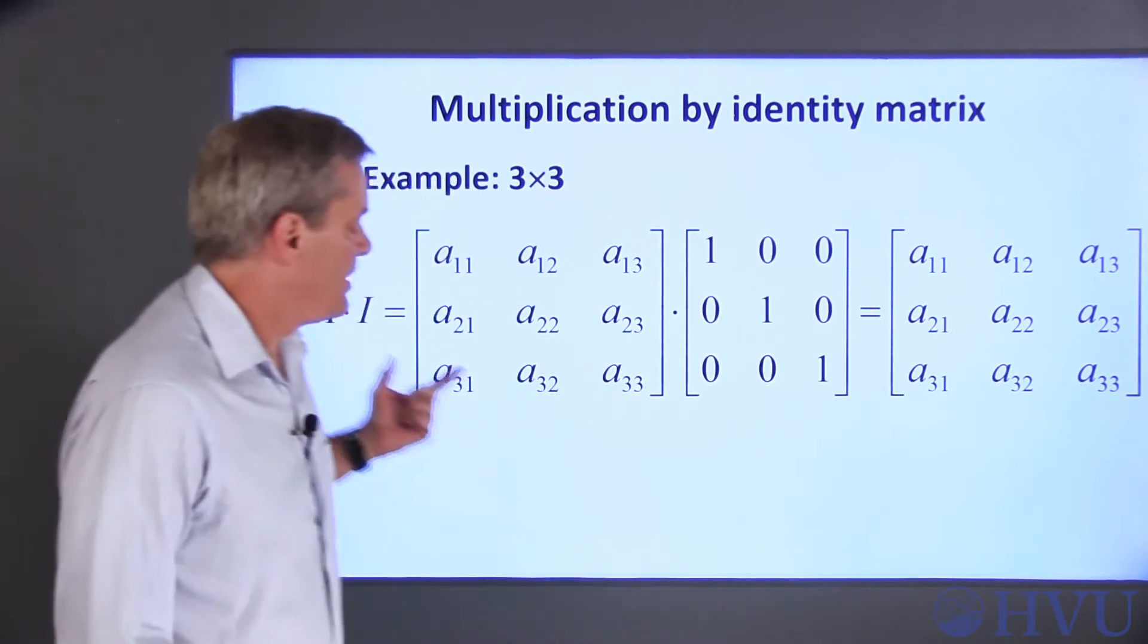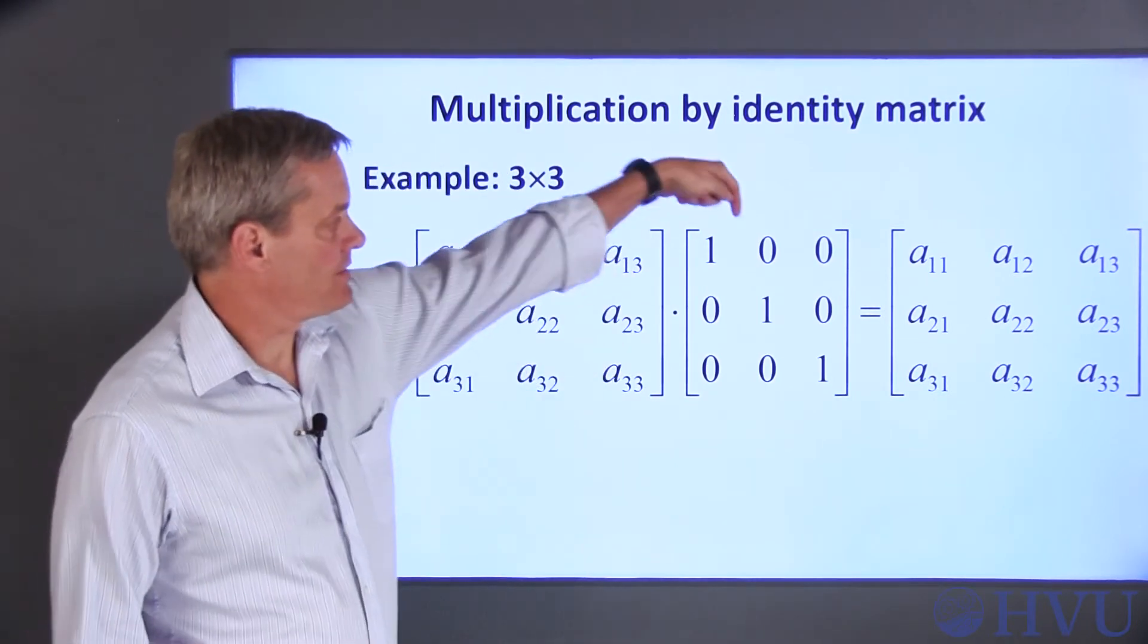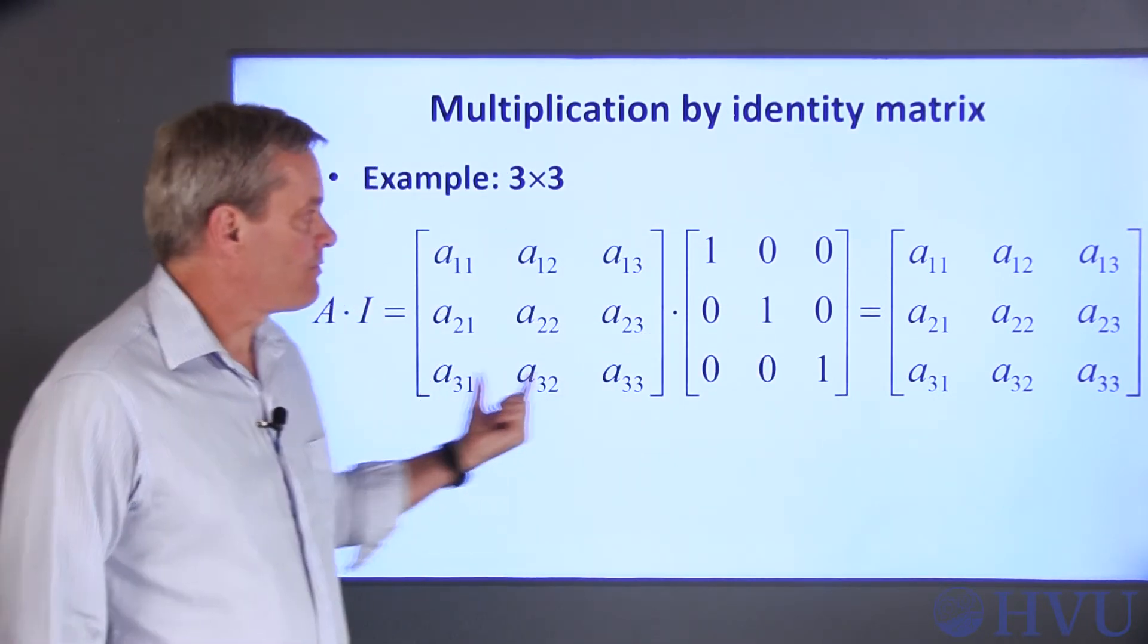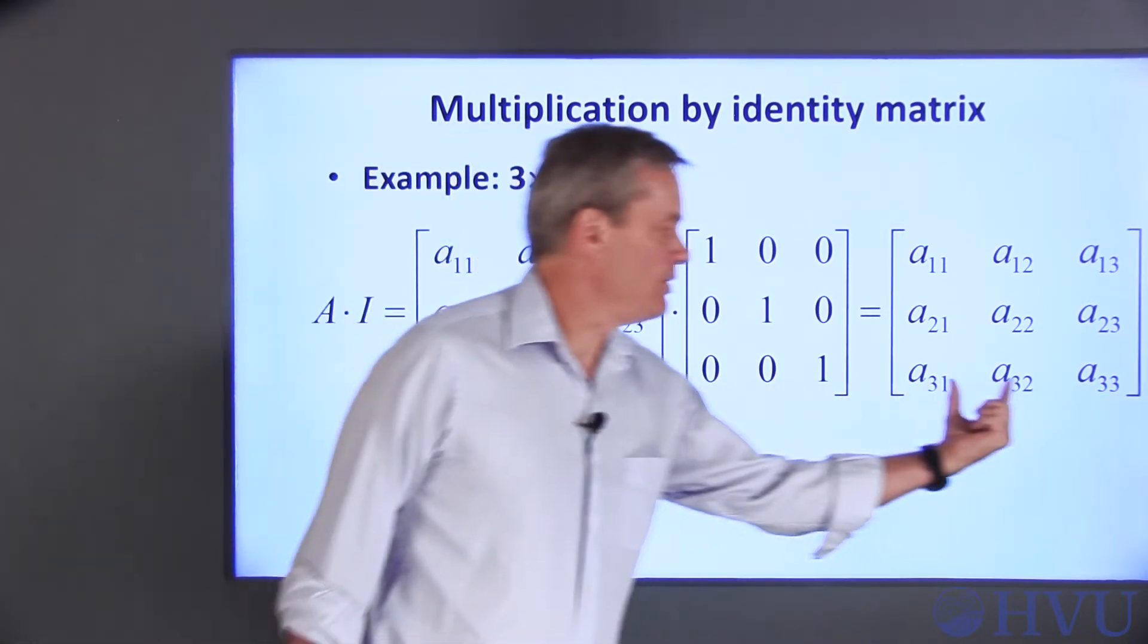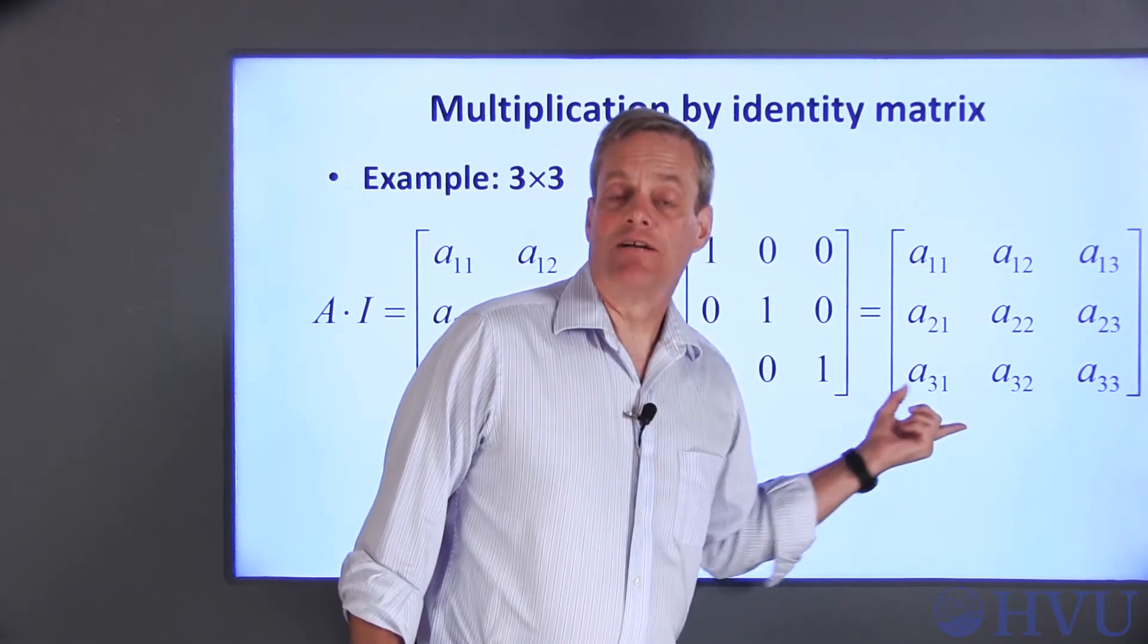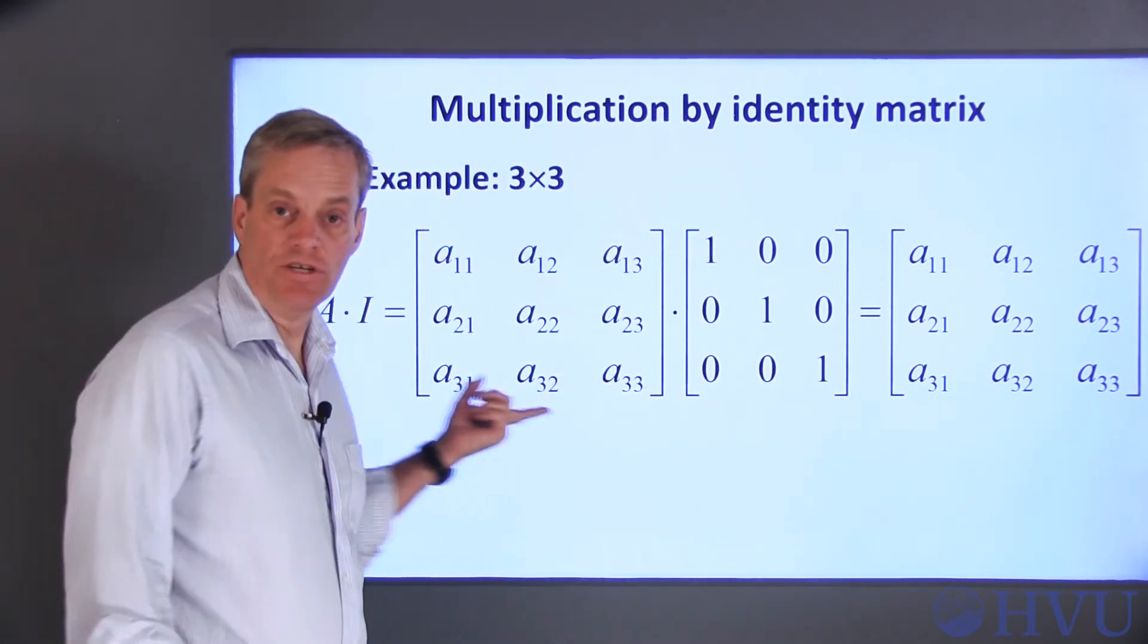A32 is generated by multiplying the third row by the second column. A31 is multiplied by 0, A33 is multiplied by 0, so A32 goes in that position. And the final matrix is the same as the original matrix.